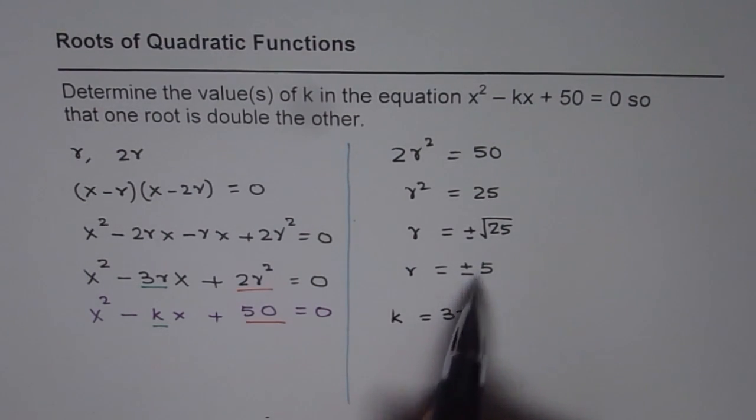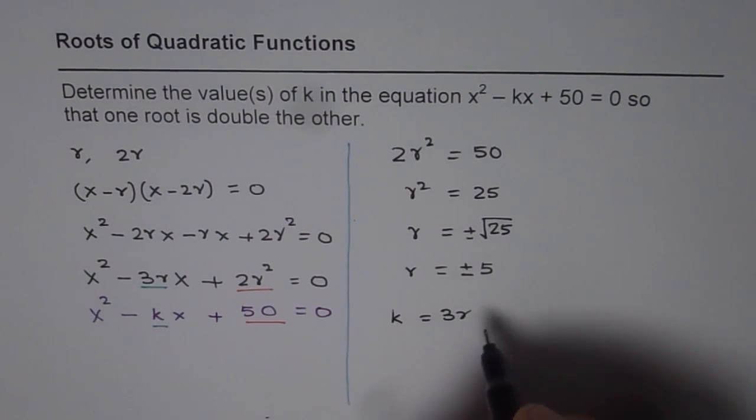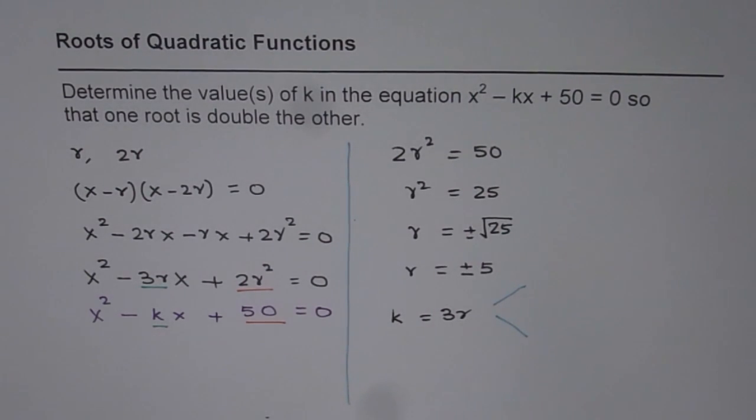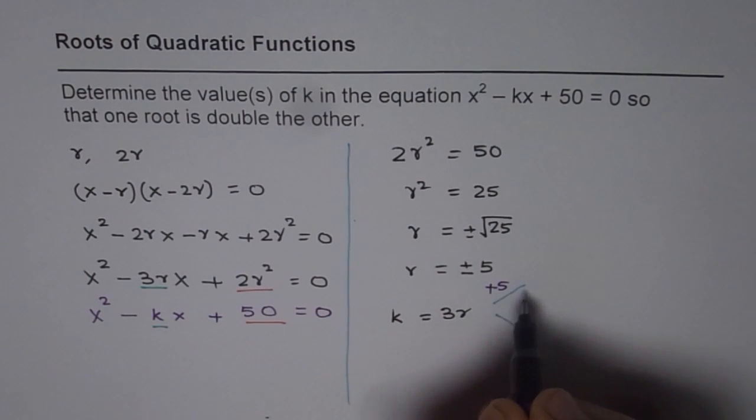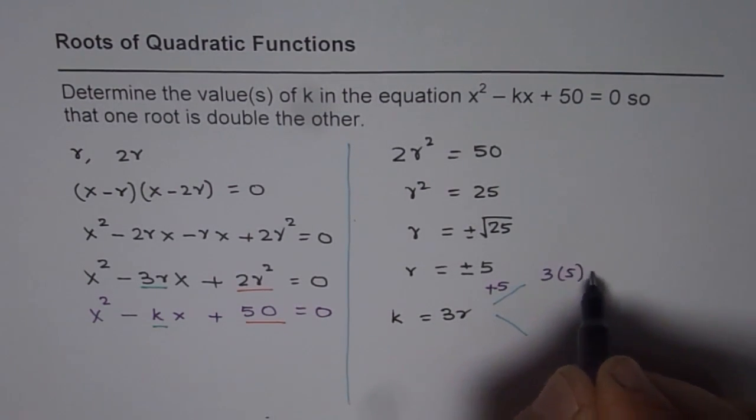Now, if r is +5... here also we have two conditions, r could be equal to +5 or -5. We can say if r is +5, then the value of k should be 3 times 5, which is 15.